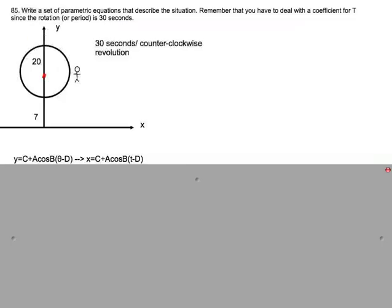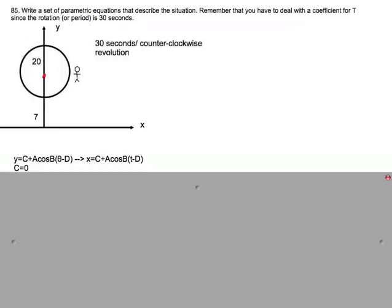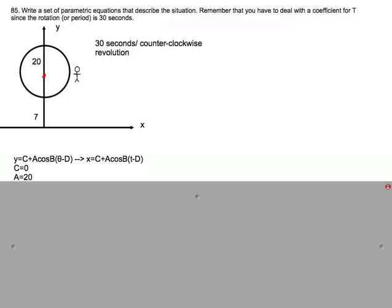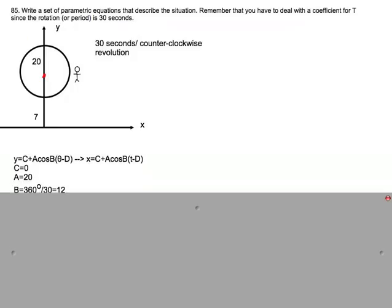First you start with the general equation which is Y equals C plus A cosine B theta minus D. Then we change it to parametric form and we have the X part of the equation which is X equals C plus A cosine B T minus D. We have that the sinusoidal axis is 0 and that the amplitude A is 20 because the radius is 20 and that's how far the stick figure is moving from the right bound to the center and from the center to the left bound.